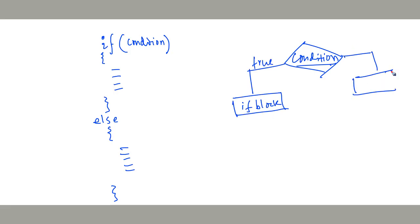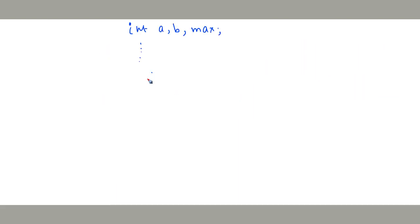Otherwise, if the condition is false, then whatever we write within the else-block — that means the curly braces under else — is executed. So if this condition is true, then the if-block is executed. If the result of the condition is false, then the control goes to the else-block and that is executed.